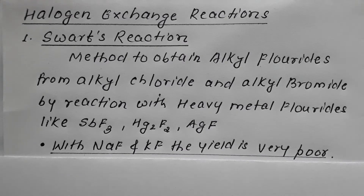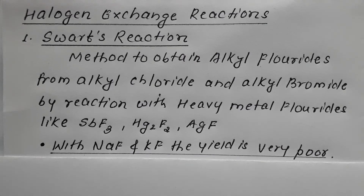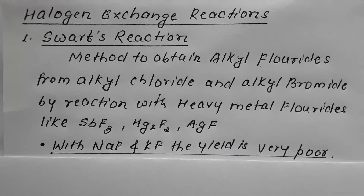We have dealt with various other methods through which haloalkanes can be prepared. We have discussed that haloalkanes can be prepared from alcohol by reaction with HX, by reaction with PCl5, by reaction with PCl3, by reaction with SOCl2. At the same time, haloalkanes can be prepared using hydrocarbons — saturated hydrocarbons and unsaturated hydrocarbons.